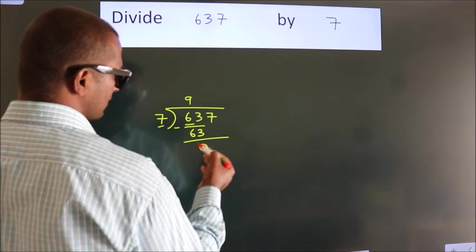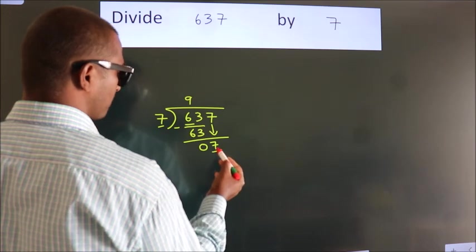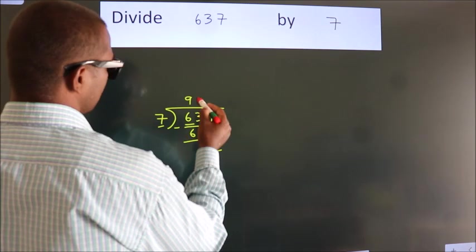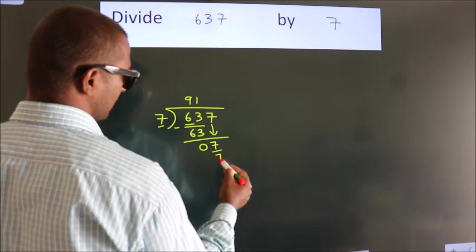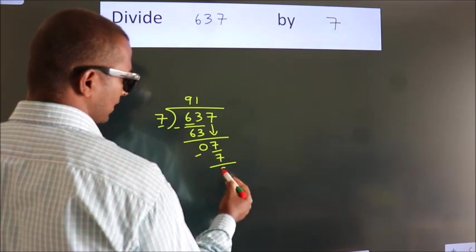After this, bring down the beside number. So 7 down, so 7. When do we get 7? In 7 table, 7 nines, 7. Now we subtract, we get 0.